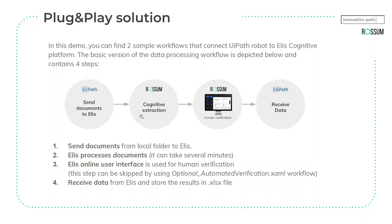Thank you, Tomas. My name is Mikhail Klodner, I'm CTO at InnovationPath, and I'm really happy you've joined this webinar. You are probably already familiar with RPA — robotic process automation. You know that on the market there are several vendors and several automation platforms. What we will show you today is the solution based on UiPath technology. In this demo, we basically have two sample workflows that interact with ELIS.